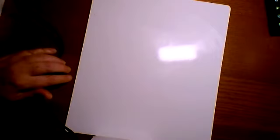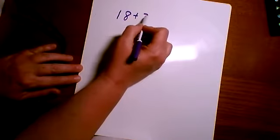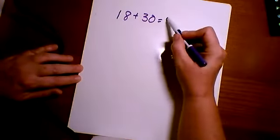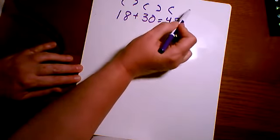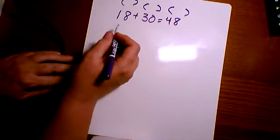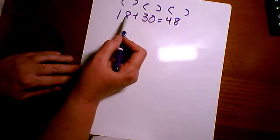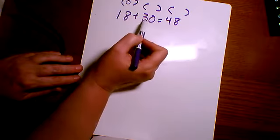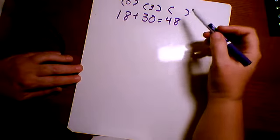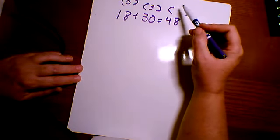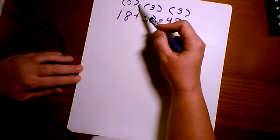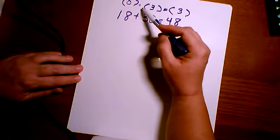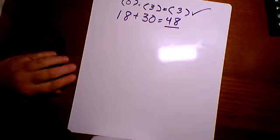Let's do a couple of these problems together. Take 18 plus 30 equals 48. The check number for 18: one plus eight is nine, so the check number is zero. Three plus zero is three. Four plus eight is 12, and one plus two is three. So you check: zero plus three equals three — and that matches the check number for 48, which is three. Check — we got the answer correct.